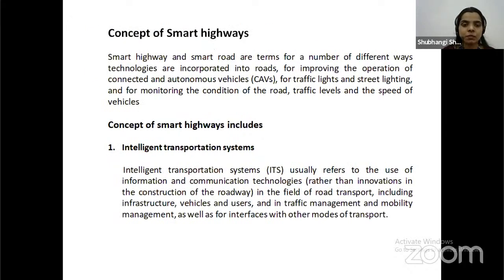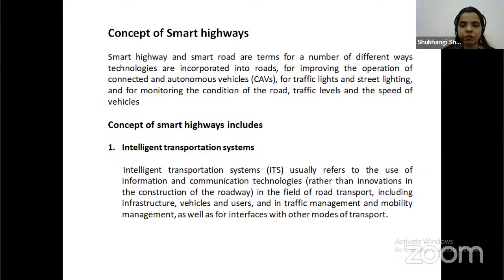Smart Highway and Smart Road are terms for a number of different phase technologies incorporated into roads for improving the operation of connected and autonomous vehicles (CAVs), for traffic lights and street lighting, and for monitoring the condition of the road, traffic levels, and the speed of vehicles. The concept of Smart Highway includes Intelligent Transportation Systems (ITS).